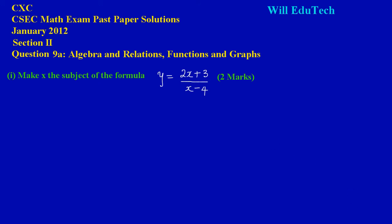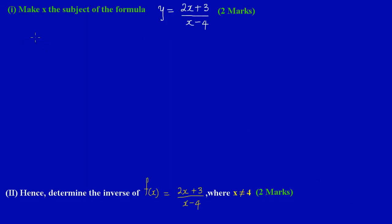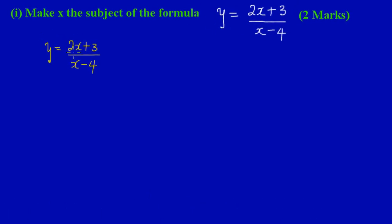I'm just going to pull up the screen a bit. We have the equation y, and let's just rewrite it: y = (2x + 3) / (x - 4). Basically, to make x the subject, what we're going to be doing is taking everything to one side — allowing x to remain alone on the left side. That's the whole idea behind making a variable the subject in an equation.